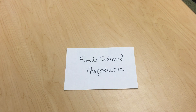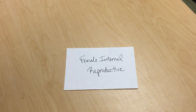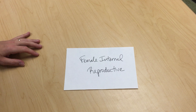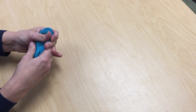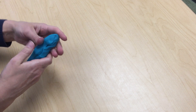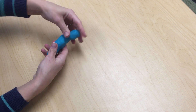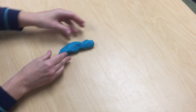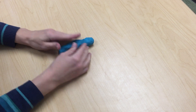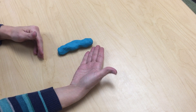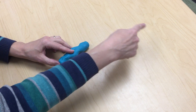Hi everyone, this is Dr. Alex Hall. Today we're going to be making a clay model of the female internal reproductive system. To start with, to give us some context, we're going to begin with the most posterior of the structures that we're going to find in the female pelvis, and that's actually going to be the rectum. So I'm just going to go ahead and create a rectum here, which is of course receiving stool from the sigmoid colon.